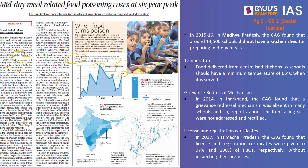Close to 12% of victims became ill after consuming midday meals in which lizards, rats, snakes, and cockroaches were found. Most of these cases were recorded in Karnataka, Odisha, Telangana, Bihar, and Andhra Pradesh. Looking at state-wise data from 2009 to 2022: Bihar had 950 victims, Odisha 1,327, Telangana 1,092, Karnataka 1,524, Andhra Pradesh 794, and Tamil Nadu 132.